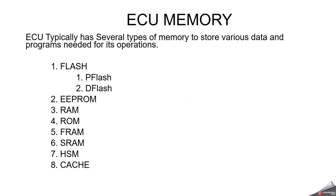First, flash — it has two types of memory: one is P-flash, another one is D-flash. Then EEPROM, RAM, ROM, FRAM, SRAM, TCM, and cache.